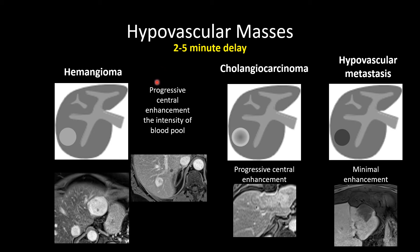Moving to the two to five minute delay, you will see continued progressive central enhancement within the hemangioma, which is now homogeneously or near-homogeneously enhancing. The enhancement of the hemangioma is very similar in signal intensity to blood pool. For the intrahepatic cholangiocarcinoma, there is also progressive central enhancement with near-homogeneous enhancement of the mass, but that enhancement is actually less than blood pool. The progressive central enhancement within the cholangiocarcinoma is partly due to the fibrotic nature of the tumor and third-spacing of gadolinium into hypovascular regions of tumor, allowing gadolinium to accumulate over time.